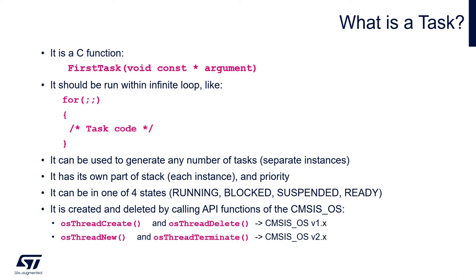The task has its own part of the stack, so each instance of the task has its own stack and its priority. The task can be in one of four states: running — only one at a time — blocked, suspended, and ready.